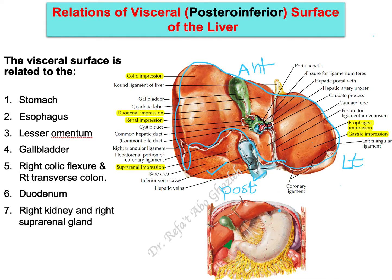Starting from the left side: if you look at the liver flipped up, it covers part of the right side of the stomach, so we expect an impression here — the gastric impression, which faces the right side of the stomach. The stomach is also connected superiorly to the esophagus, so there is an esophageal impression posteriorly toward the midline.